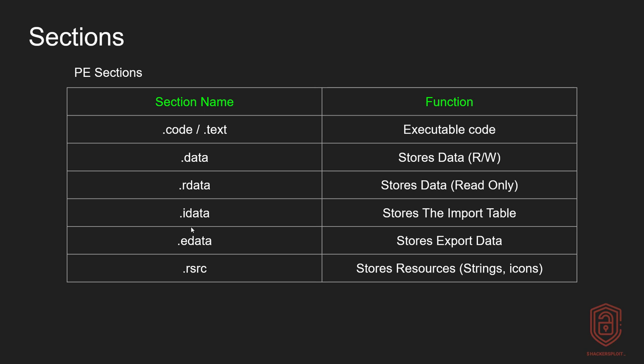One thing to note: if you do not find the .idata and .edata sections, it doesn't mean the executable doesn't contain the import table or export data — it means they could also be loaded into the .rdata section. If this seems a little confusing, don't worry at all, we've already taken a look at this and I'll explain it as we move along. We then have the resources section, which contains the resources for the binary or the executable — things like strings and icons, just to name a few. We'll be exploring the resources as we move along.